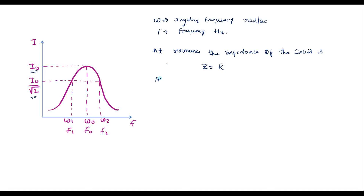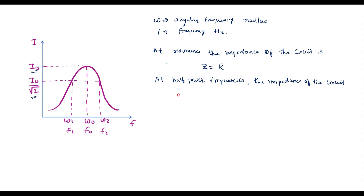At half-power frequencies, the impedance of the circuit is given by R = |XL − XC|. Let me call this equation 1. Here, ω1 or F1 is known as the lower cutoff frequency.